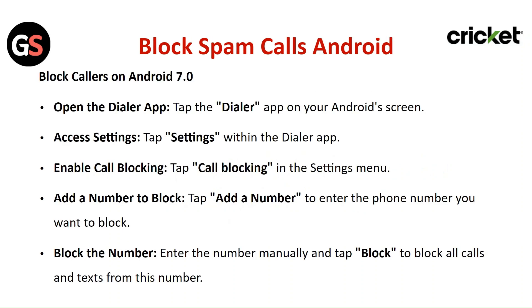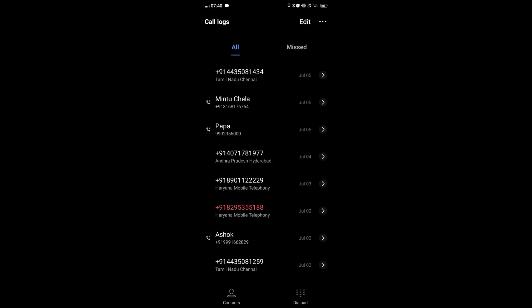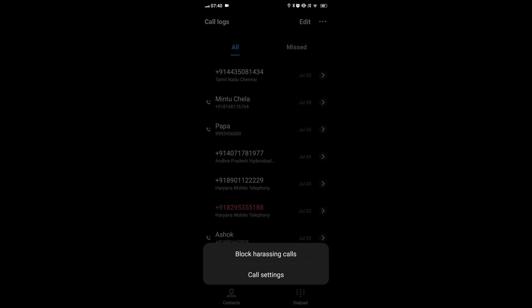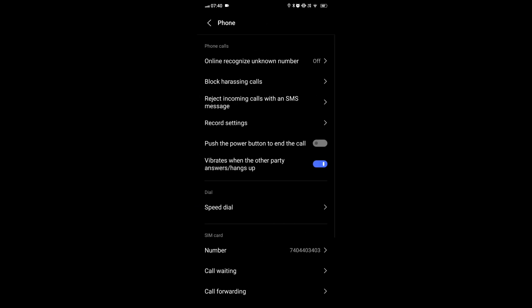To block spam calls on Android, for devices running Android 7.0, open the dialer app by tapping on it on your Android screen.